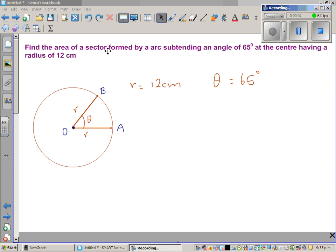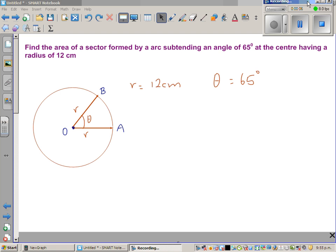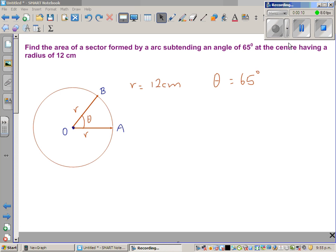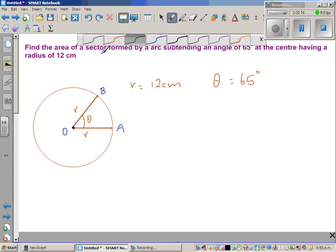In this video we're going to see how to find the area of a sector without knowing the formula, using ratio and proportion. Let's read the question: find the area of a sector formed by an arc subtending an angle of 65° at the center and having a radius of 12 centimeters. Now, a sector is always a part of the circle.